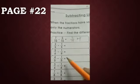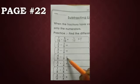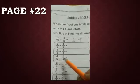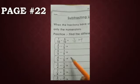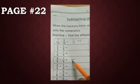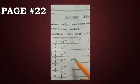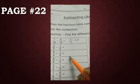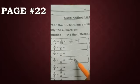Now I'll skip to the 4th question: 4 upon 5 minus 1 upon 5. These are like fractions, so the denominator stays as 5. 4 minus 1 equals 3. This is your answer.